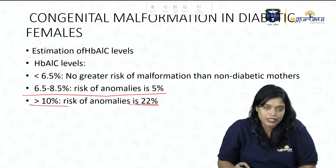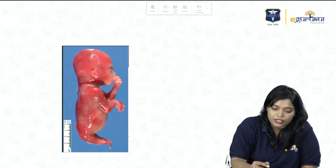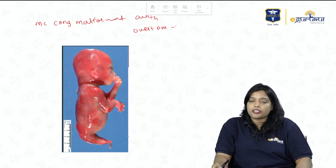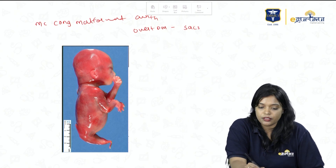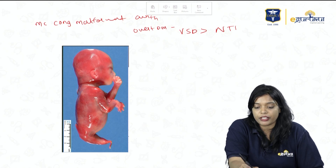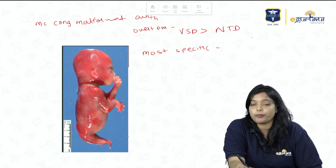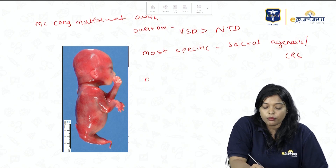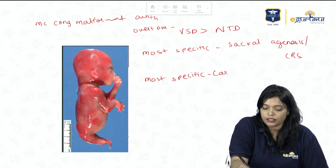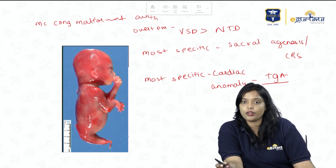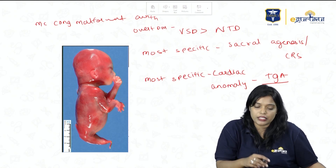The most common congenital malformation associated with Overt DM is ventricular septal defect (VSD), more than neural tube defect. The most specific malformation is sacral agenesis or caudal regression syndrome. The most specific cardiac anomaly is transposition of the great arteries.